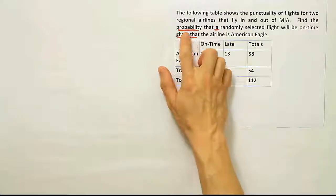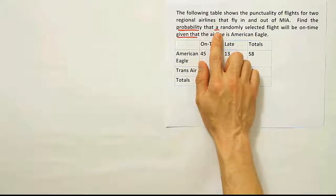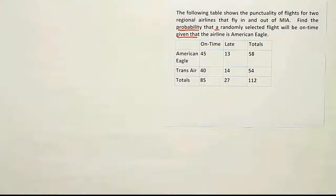We have the phrase given that. The fact that it's a probability, we're only selecting one flight, and we have the phrase given that indicates that it's conditional probability.